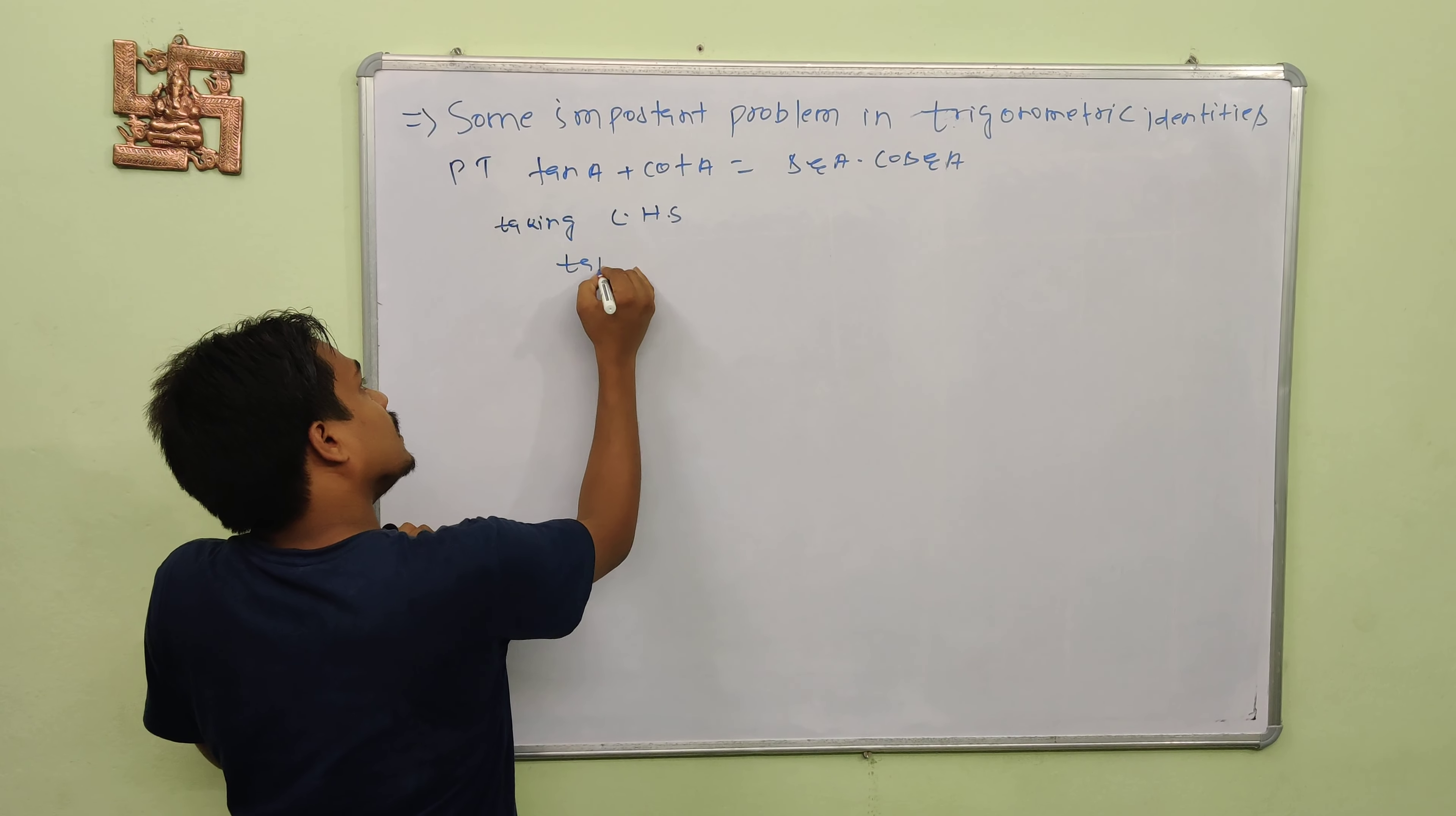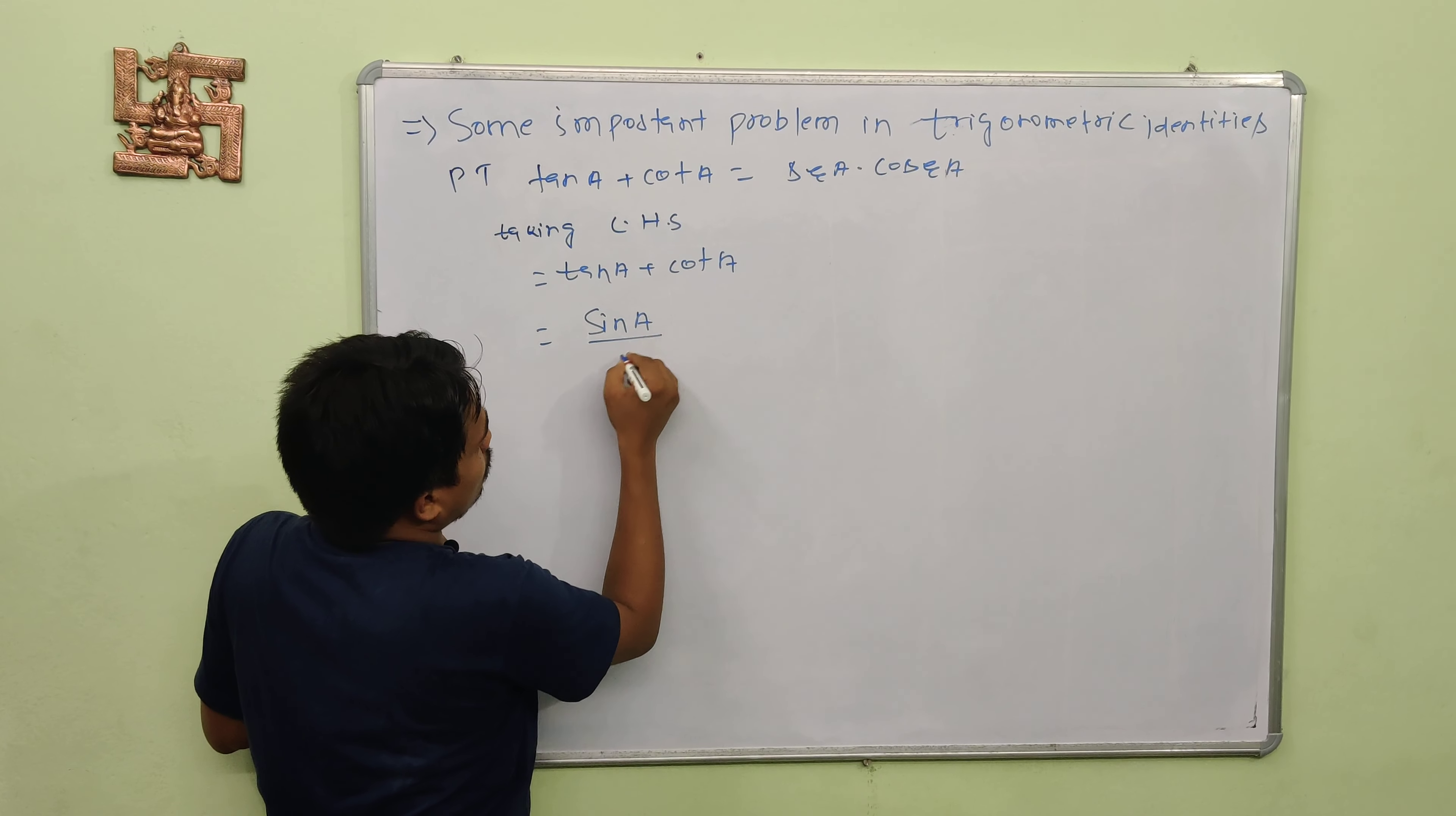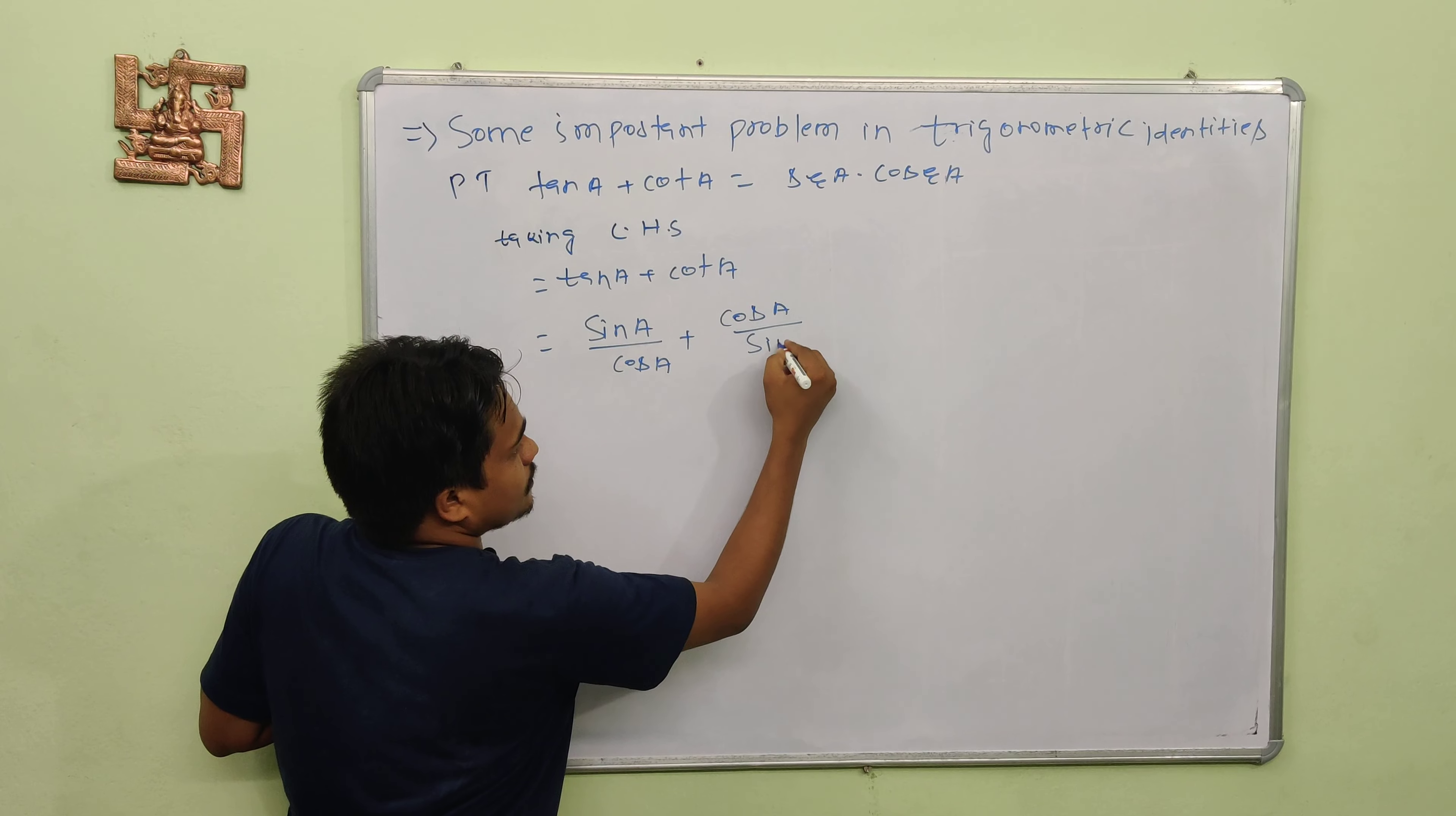LHS is tan A plus cot A. Now tan A can be written as sin A upon cos A. Similarly, because cot A and tan A are opposite, we can write cot A as cos A upon sin A.